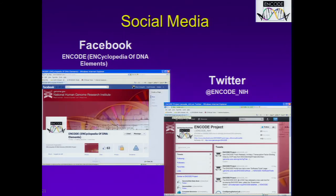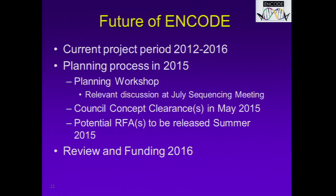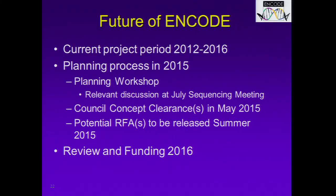You can follow us on Facebook and Twitter, where we release information about major publications, data releases, and other information about the project. The current project period ends in 2016, so we're initiating a planning process that will mostly take place in 2015. We'll have a planning workshop, and the relevant discussion at the July sequencing meeting will be a big starting point. We plan to have one or more concept clearances at the May 2015 Council meeting, with potential RFAs to be released in the summer of 2015 and review and funding in 2016.